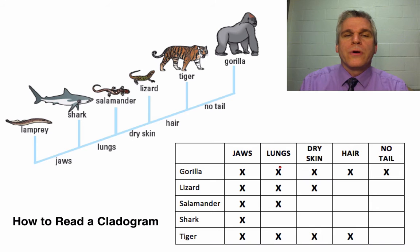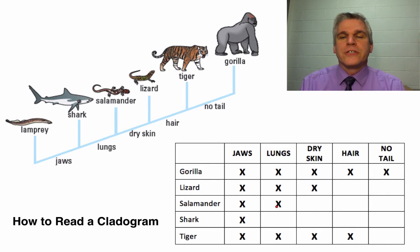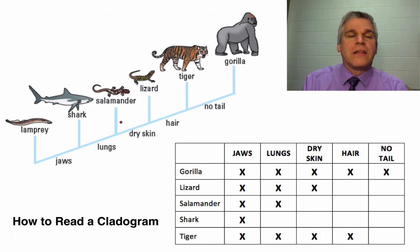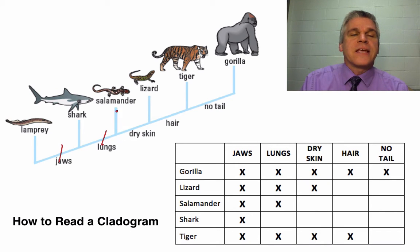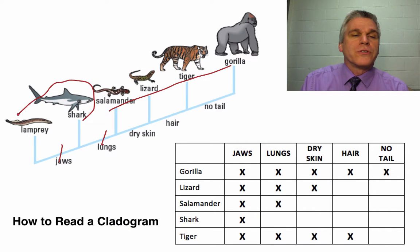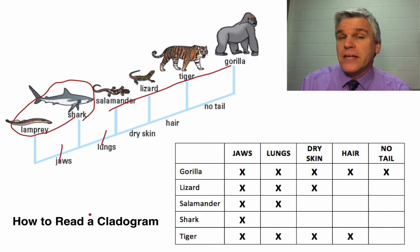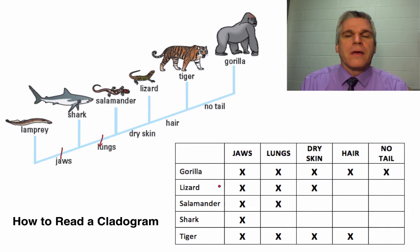Then we go to the lungs. Notice that the gorilla, lizard, salamander, and tiger all have lungs. That is the separating point from these four compared to the shark — actually, the shark and the lamprey, neither of them have lungs.